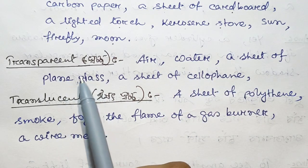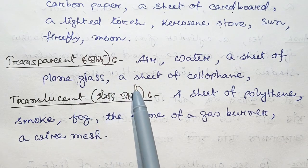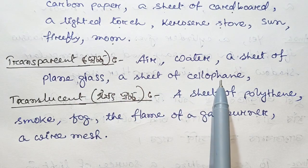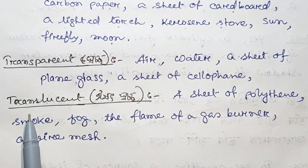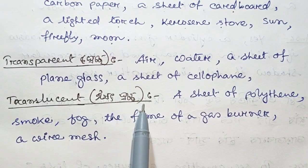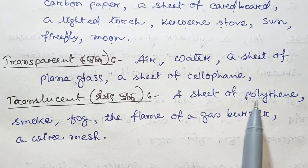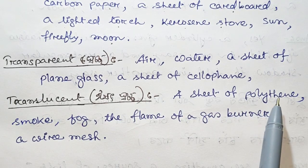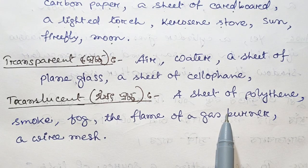More materials: a sheet of plain glass, a sheet of cellophane, a sheet of paper, a sheet of polythene, smoke, and the flame of a gas burner.